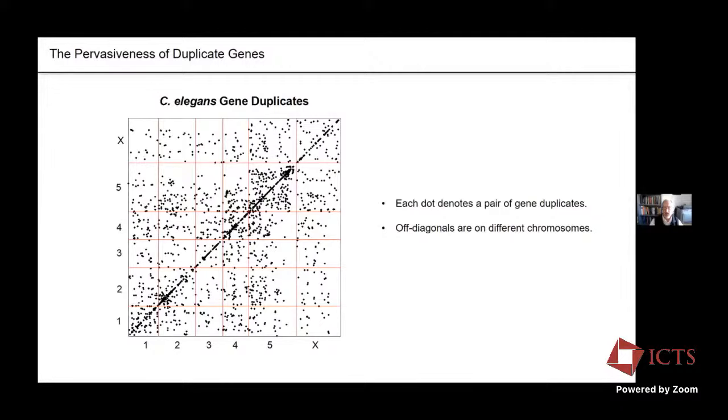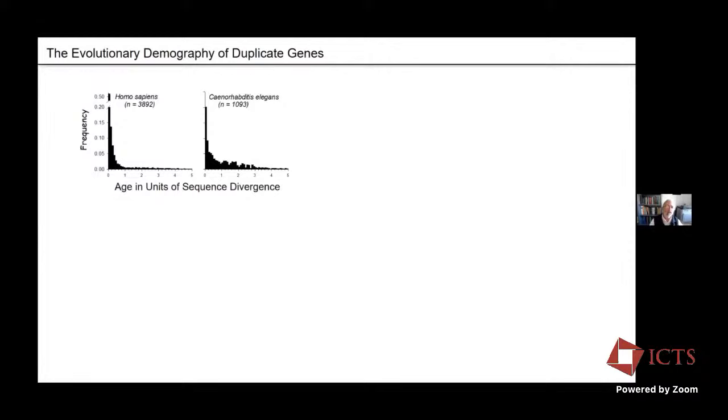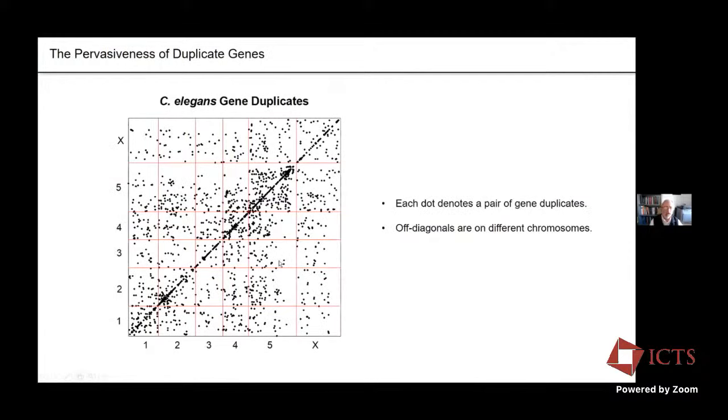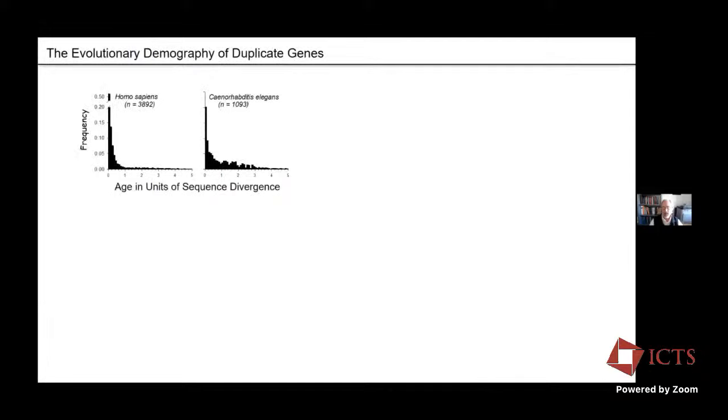You get some insight into the temporal dynamics of the origin of duplicate genes in the following way. You've got each dot represents a pair of genes in the genome. You can align those with respect to each other. Then you can simply ask the question, how much have they diverged at the nucleotide sequence level? If they're newborns, they'd be 100% identical. And as they age, they independently pick up mutations, and they diverge over time. So you can get an age distribution of all the genes in a genome. Here it is for C. elegans. You can see there's a very large number that are essentially identical. And then it tapers off as you get to older and older duplicate genes, such that very, very few survive for very, very long periods of time.